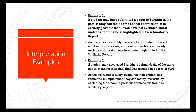Another example: some students are worried about their assignment and submit three or four times. This could result in a 100% similarity score, which might make the lecturer think the student has plagiarized. But because the student submitted on multiple occasions, it's going to show that. What would likely happen is that the lecturer could exclude the previous submissions, or delete the submissions done before and leave only one submission, then rerun the report so you don't get that 100% similarity.